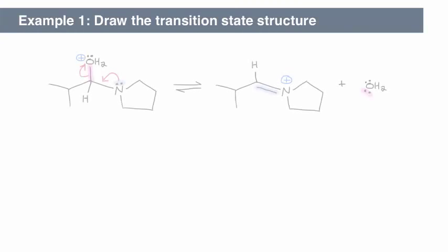In this example, the mechanism and electron pushing arrows have been drawn for us. Our goal here is to represent the transition state structure. What do the molecules look like at that point?